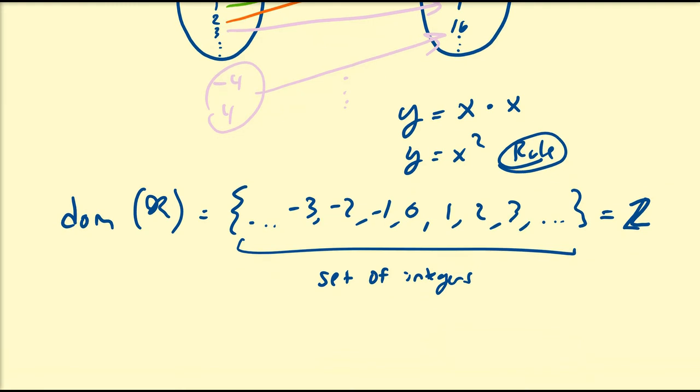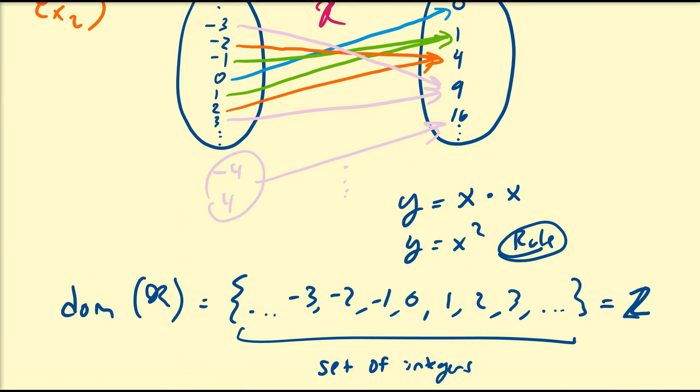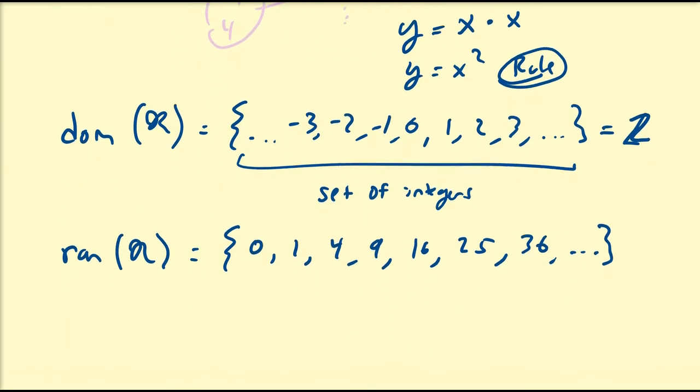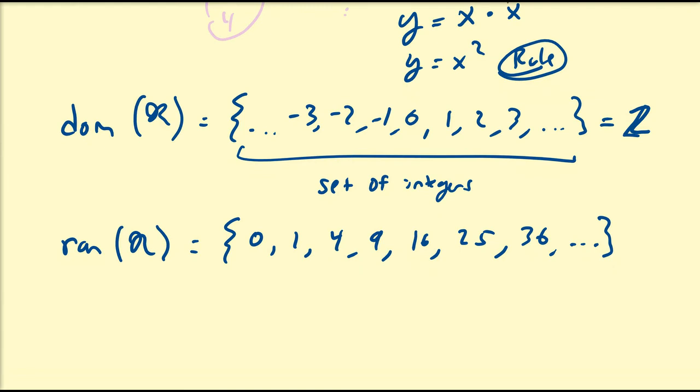So that's the set of integers, and what about the range? Well, the range of R is going to be the square of all the integers, so that's going to be 0, 1, 4, 9, 16, 25, 36, and so on. So what does that give us? Well, that gives us the squares of integers, so some people can call that Z squared, but I'm not going to make things more complicated than that.